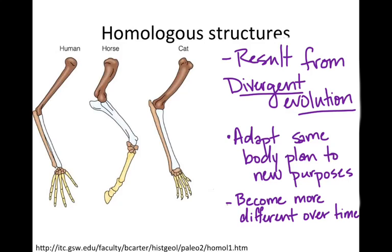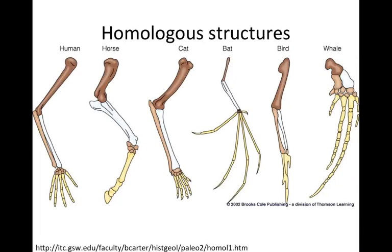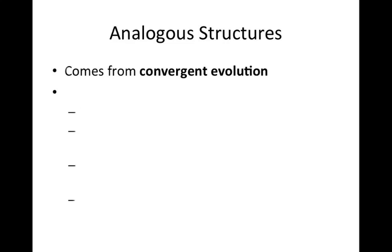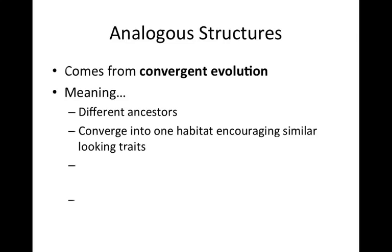A great example of homologous structures is the five-fingered limb. Conversely, there are times when a new habitat opens up and many creatures take advantage — think of the sky. Once pterodactyls went extinct, the sky was opened to any population with variations for flying. Bats, which are mammals, and birds both have wings, but that doesn't mean they're related. Wings are an example of analogous structures — structures that are similar because of convergence, based on environmental pressure. This is convergent evolution, meaning different ancestors, with structures not anatomically related but serving a similar purpose due to a similar need.